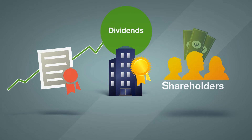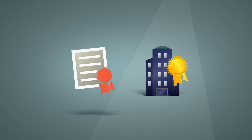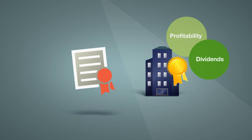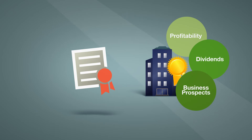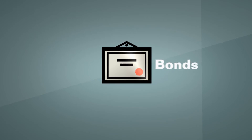On the other hand, if losses are made, no dividends might be paid or the share price might drop. Generally speaking, the share price depends on supply and demand, which is influenced by the company's profitability, the dividend it pays, its long-term business prospects, or the general sentiment of investors and consumers.